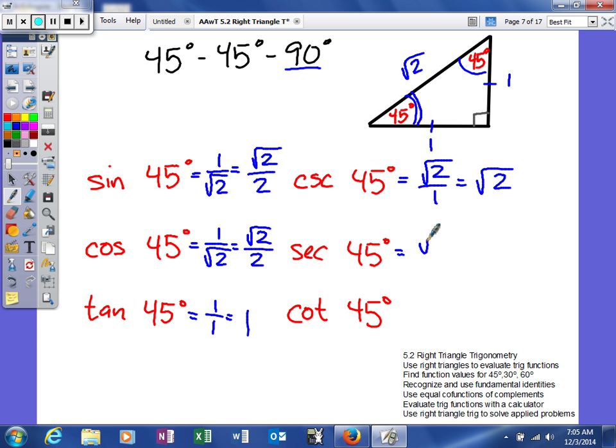And then we'll do the same thing here. The square root of 2 over 1, which is the square root of 2. And lastly, the cotangent is going to be the reciprocal of 1 over 1, which is still going to be 1 over 1, which is 1.